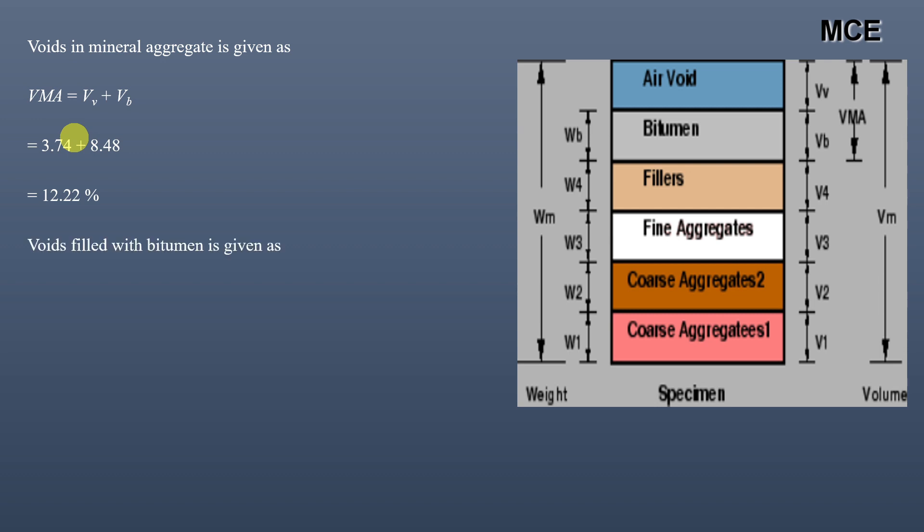Then, the voids which are filled with bitumen. This is given by Vb into 100 divided by VMA. Vb is the volume of the bitumen in the mix and VMA is the voids in the mineral aggregates. Putting values, we get 8.48 into 100 divided by 12.22, which equals 69.39%. This is the voids filled with bitumen in the mix.